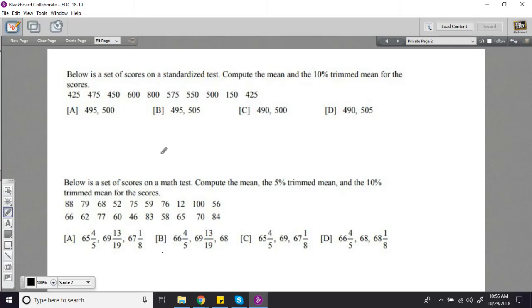In these problems, we're being asked to compute something called a trimmed mean. You probably know how to compute a mean already - you just add all your numbers together and divide by the number of numbers. With a trimmed mean, you basically do the same thing, except before you do that adding and dividing, you trim off a certain percent of the data from the top and the bottom.